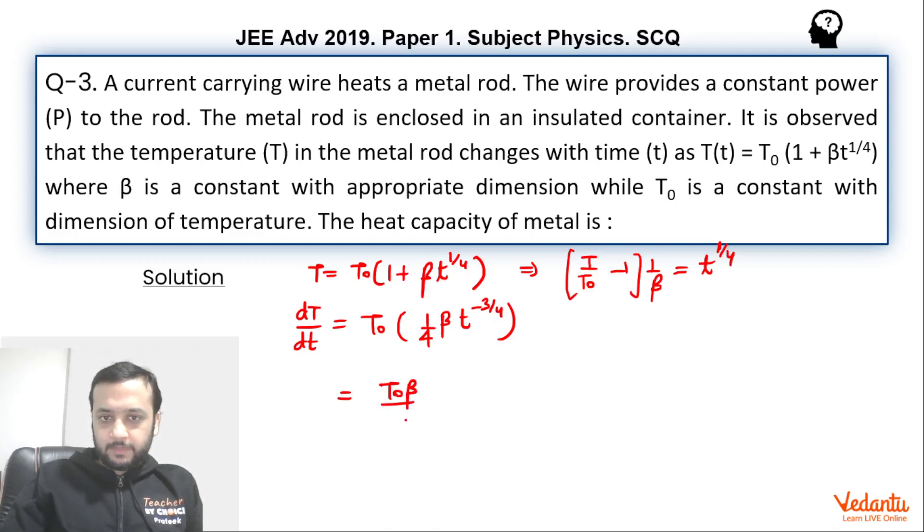So I'll write it as T₀ beta by 4 and denominator T to the power 3/4. That means its cube. So if we cube it, you can see that beta cube in denominator will go in the numerator and it will become like this, and this will be T/T₀ minus 1 whole cube.